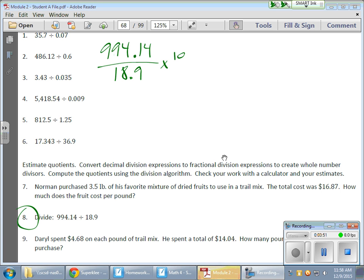Everything's going to gain one place value. I only need one place value to get this into a whole number range. So, I have 189, and everything there. 9,941.4. And that's my new problem. So, 189 into 9,941.4.